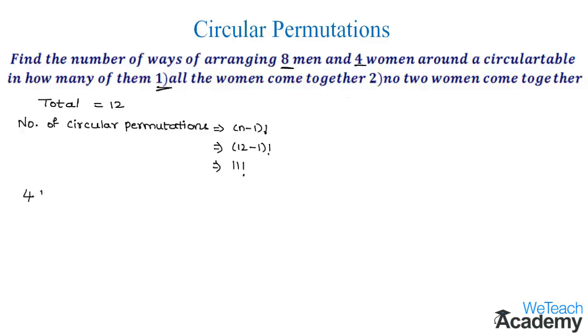There are four women, and assume that the four women as a single unit. So we have here eight men plus one unit of the women, which would come as nine. They can be arranged around the circular table in nine minus one factorial, which would come as eight factorial.